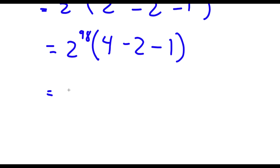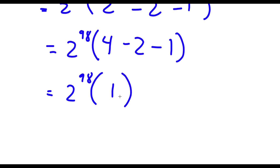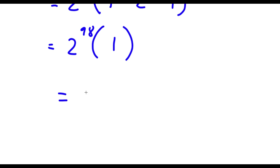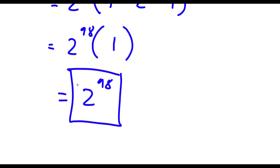This is the same thing as 2 to the power of 98 times: 4 minus 2 is 2, and 2 minus 1 is 1. So I have 2 to the power of 98 times 1, and this is simply equal to 2 to the power of 98, because anything times 1 is itself. So this is my answer.